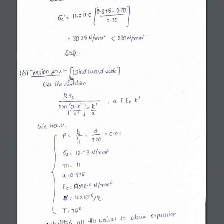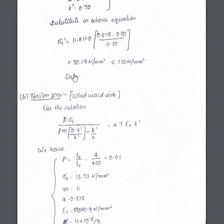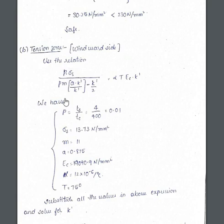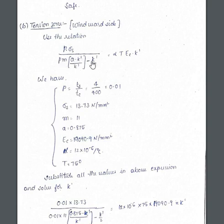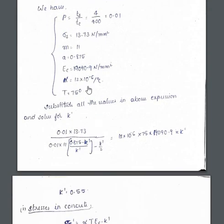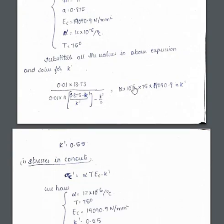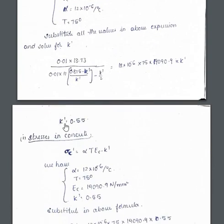Next, we examine the tension zone. All previous values were for the compression zone. For the tension zone, the expression is: p × σs' / pm × (a − k'/k') − k'/2 = α × t × Ec × k'. In the tension zone, the k' value will differ. After substituting all the known values and solving for k', we get k' = 0.55.